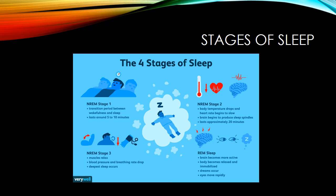The stages of sleep are defined as follows: Non-REM stage one is the transition between wakefulness and sleep, lasting around five to ten minutes before a person actually falls asleep. Non-REM stage two involves a drop in body temperature, slowing of heart rate, and the brain begins to produce sleep spindles; it lasts approximately twenty minutes. Non-REM stage three involves relaxed muscles, dropping blood pressure and breathing rate, and deeper sleep occurs.